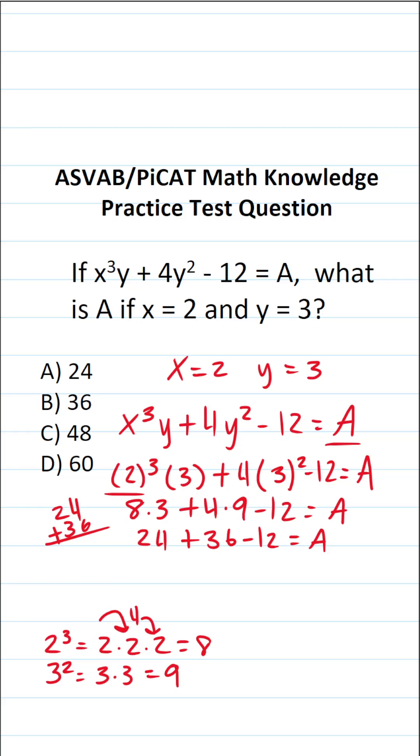So 6 plus 4 is 10. Bring down a 0. Carry a 1. 2 plus 3 is 5 plus 1 is 6. This is 60 minus 12 equals A.